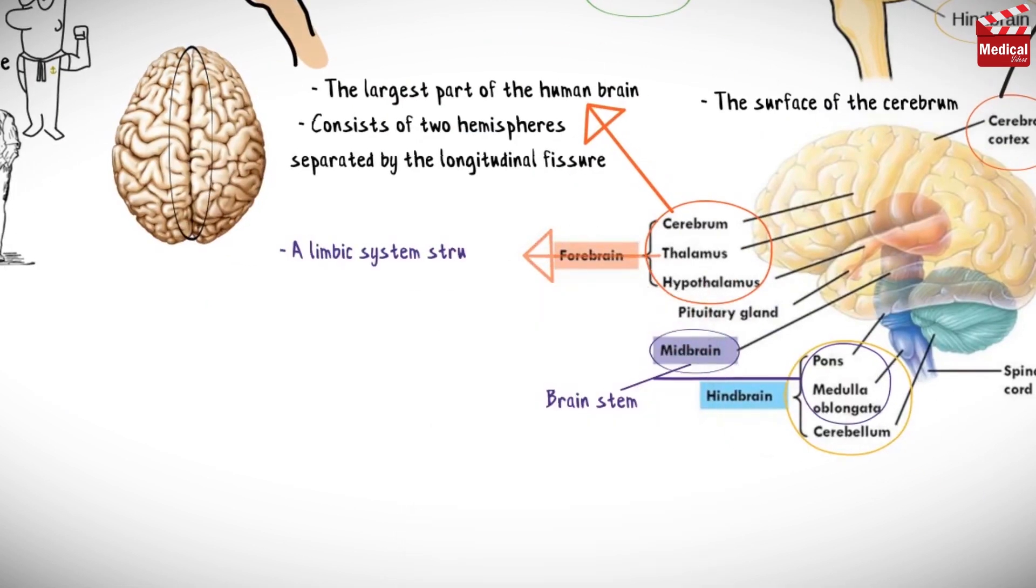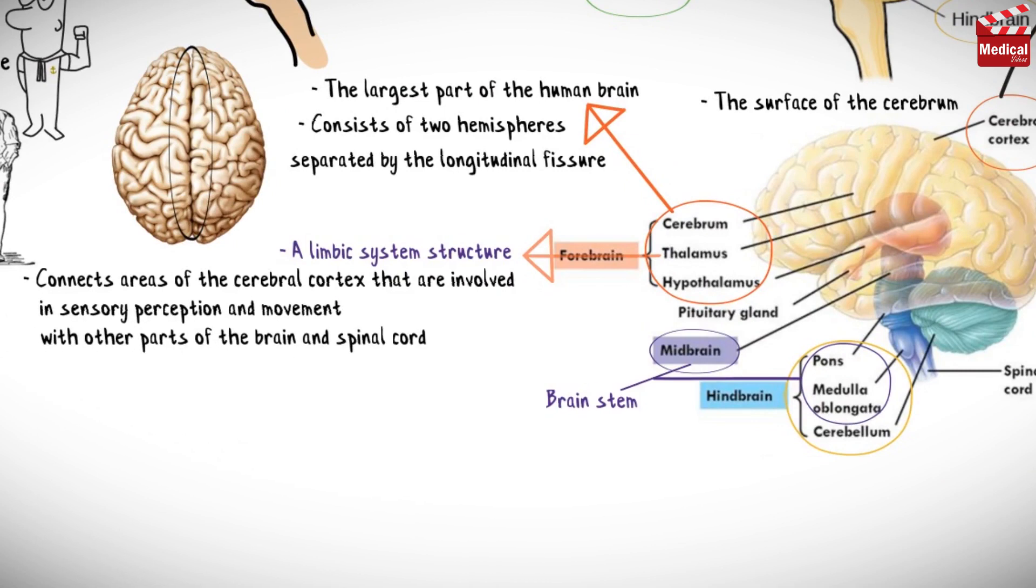Thalamus is a limbic system structure that connects areas of the cerebral cortex that are involved in sensory perception and movement with other parts of the brain and spinal cord.